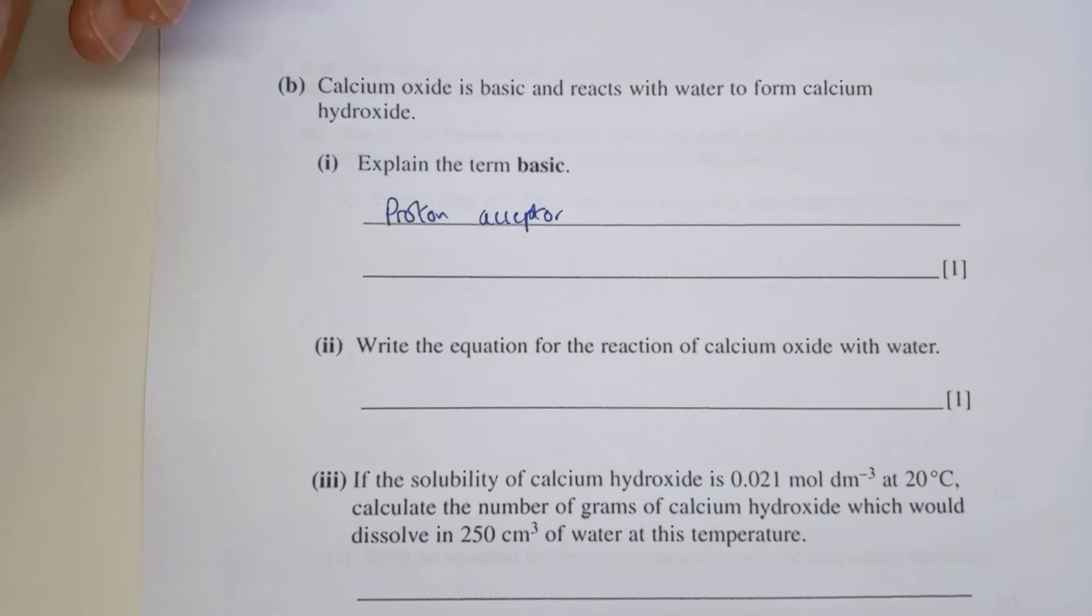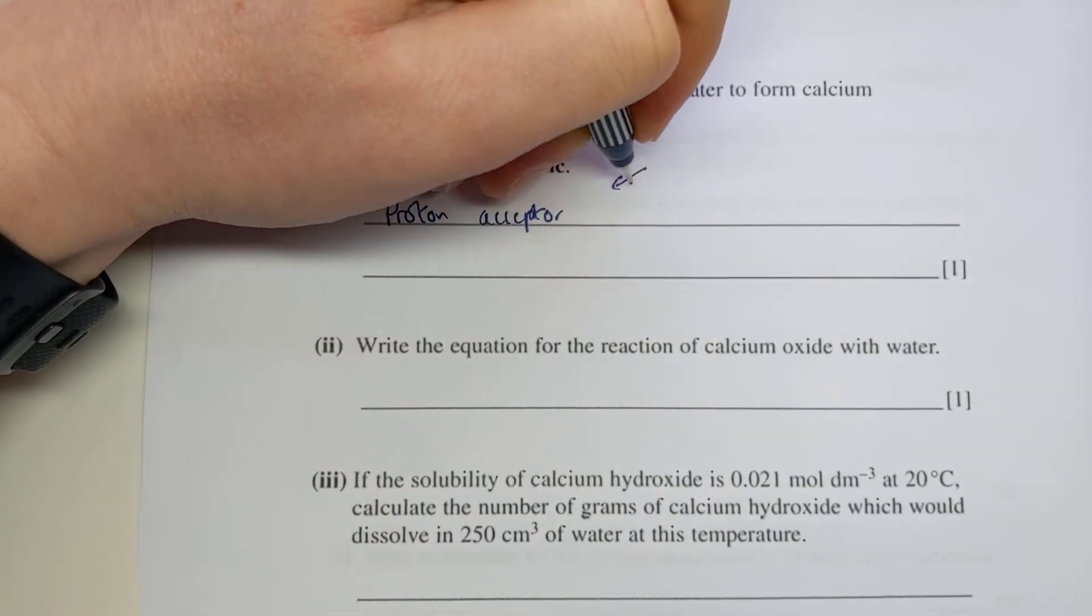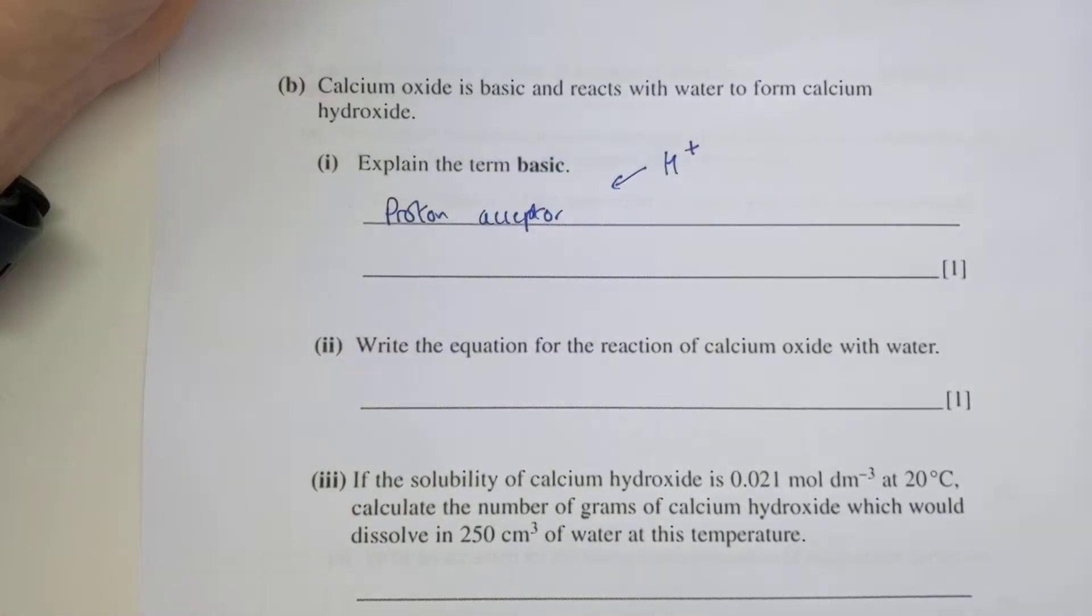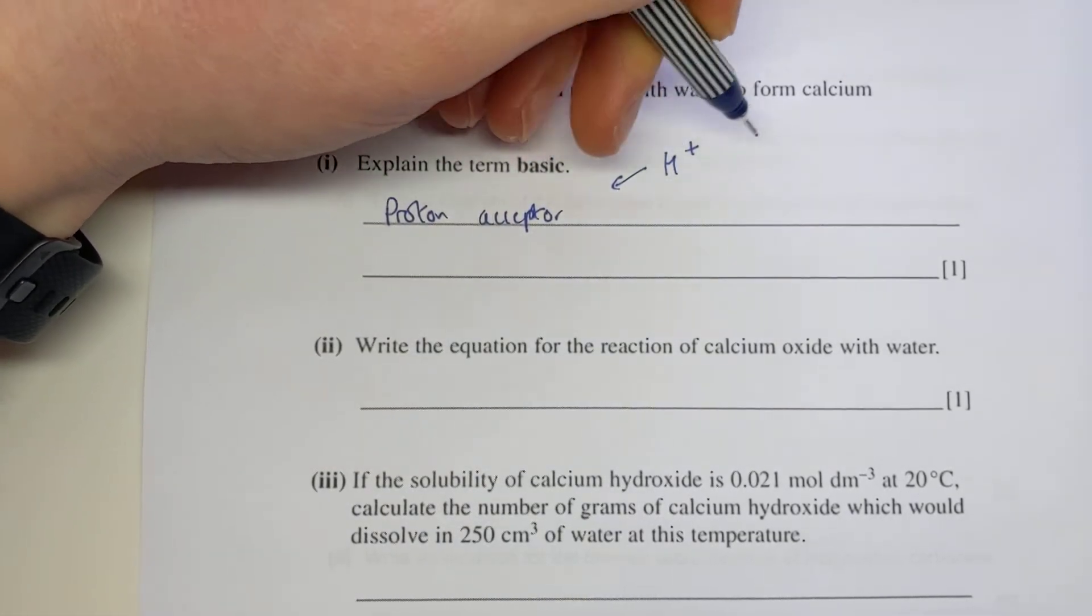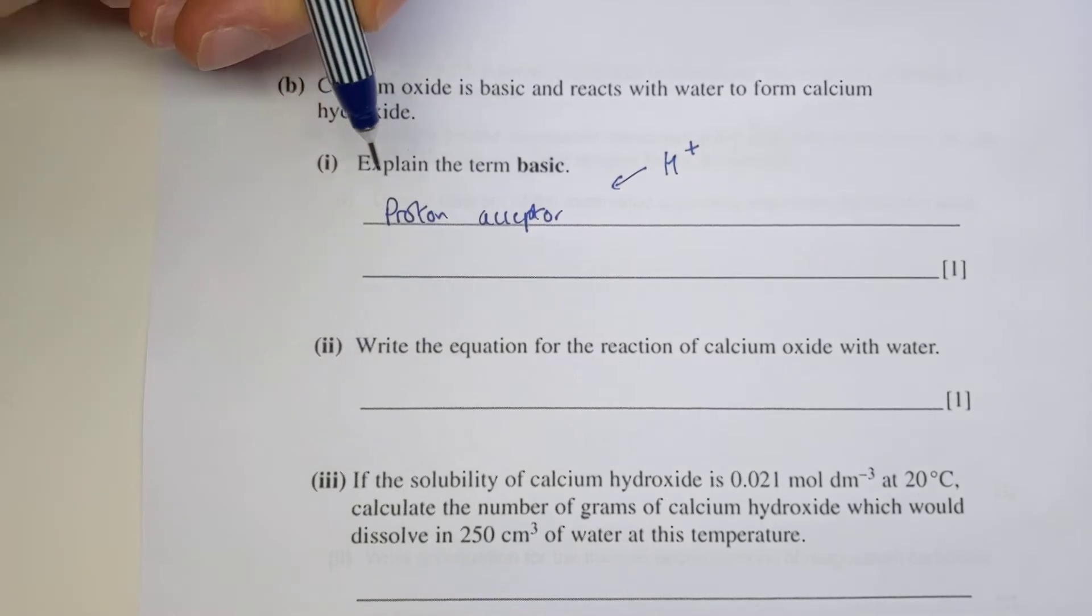That was a definition in your notes. The more advanced definition of a base is that it's a proton acceptor. Just as a reminder, a proton is what we'd normally consider to be an H+ ion, because an H+ ion is essentially just one proton and H+ ions come from acids. Essentially it's just a fancy way of saying that bases react with acids.